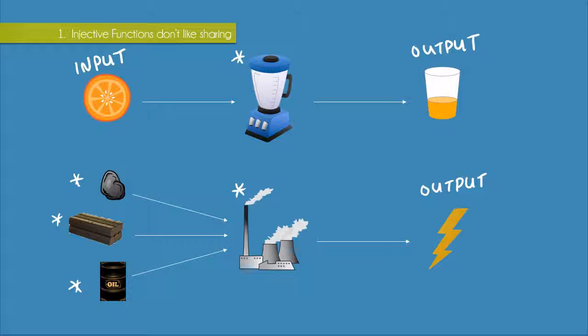In terms of function terminology, then we say that the juicer is an injective function, whereas the generating station is not an injective function.